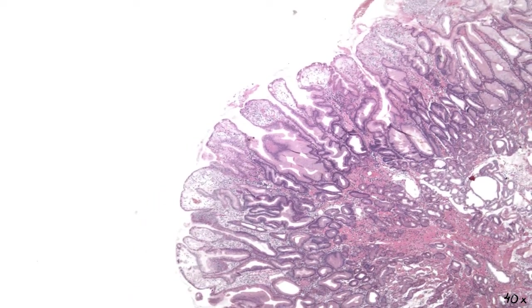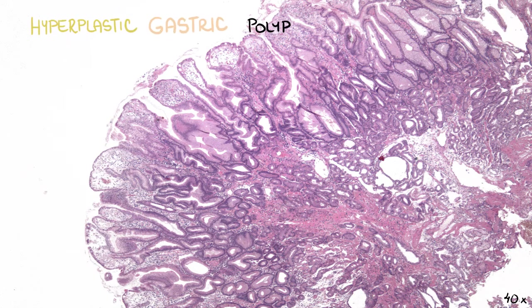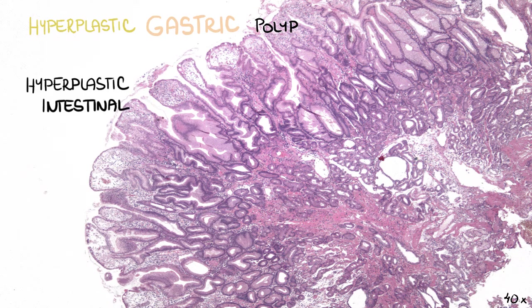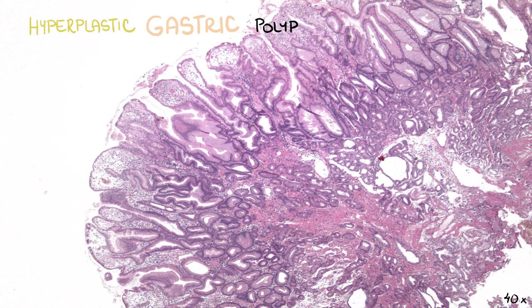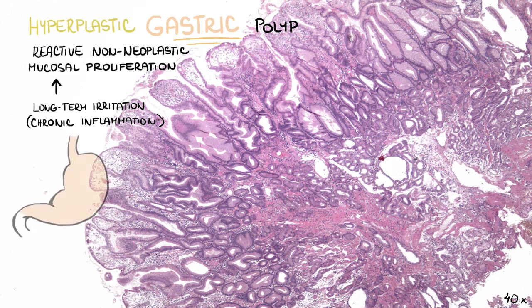Now let's proceed to polyps. The most common type of non-neoplastic gastric polyp is the so-called hyperplastic polyp. This lesion shares the name with the hyperplastic polyp of the small and large intestine, but they are not related from either the etiopathogenic or histological point of view. The hyperplastic gastric polyp is a reactive non-neoplastic mucosal proliferation caused by long-term irritation, usually in the setting of chronic inflammation. It may also develop close to chronic ulcers or percutaneous gastrostomy.